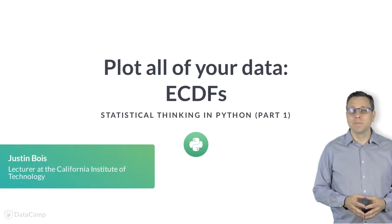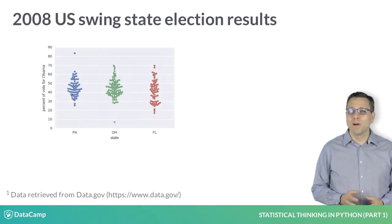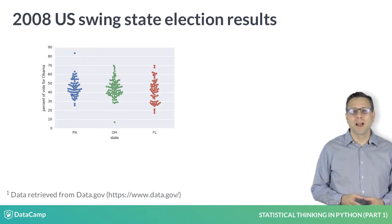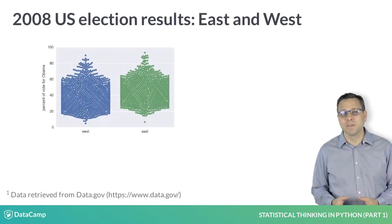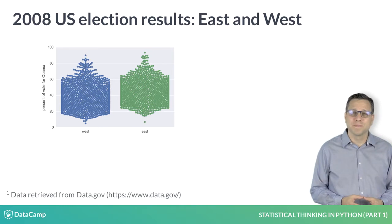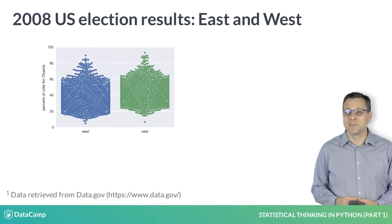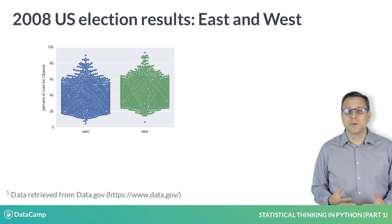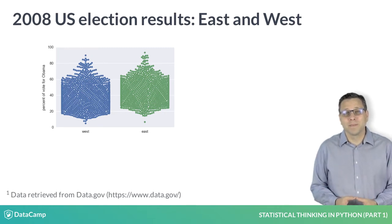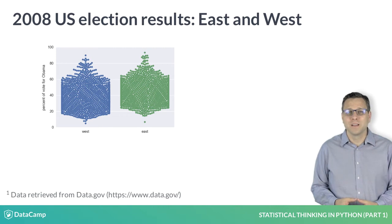We saw in the last video the clarity of bee swarm plots. However, there is a limit to their efficacy. For example, imagine we wanted to plot the county-level voting data for all states east of the Mississippi River and all states west. We make the same swarm plot as before, but using a data frame that contains all states, with each being classified as being east or west of the Mississippi. The bee swarm plot has a real problem: the edges have overlapping data points, which was necessary in order to fit all of the points onto the plot. We are now obfuscating data, so using a bee swarm plot is not the best option here.